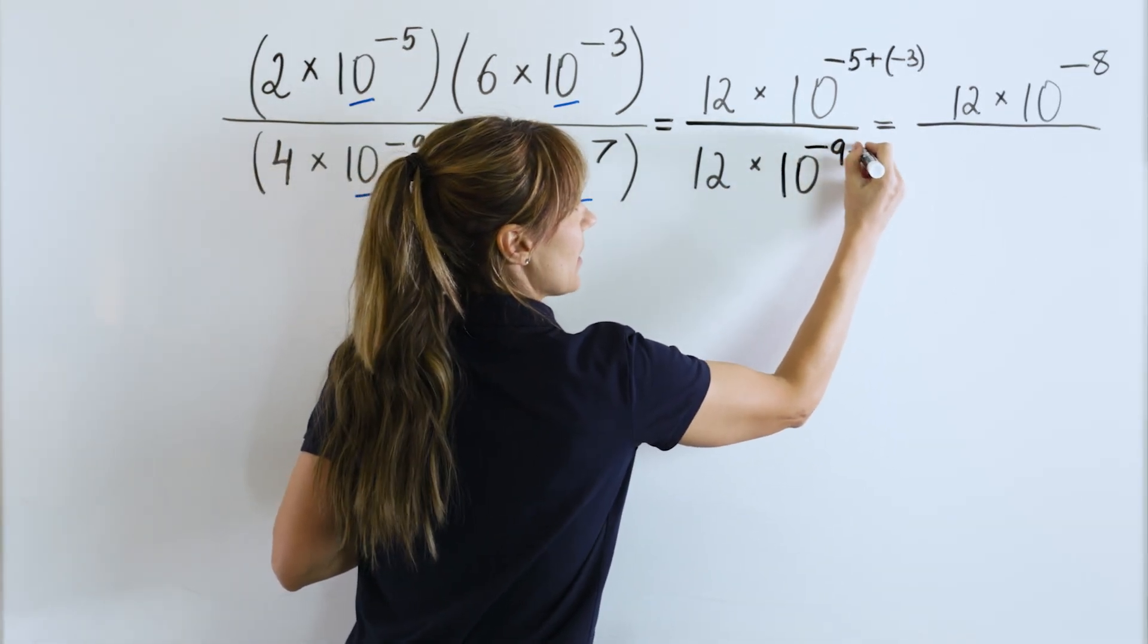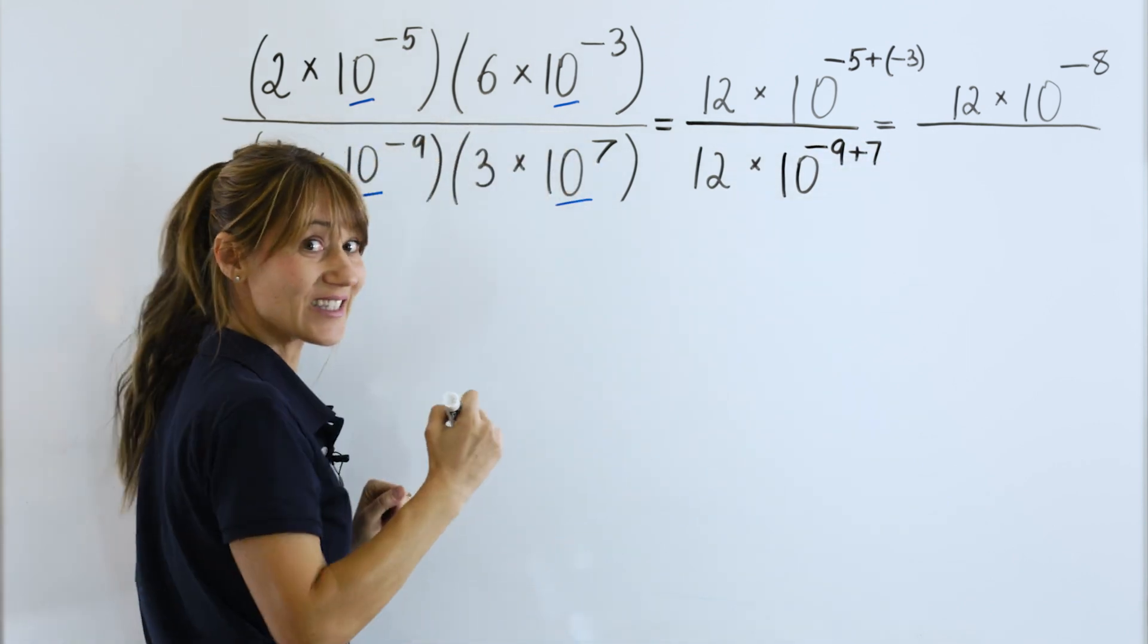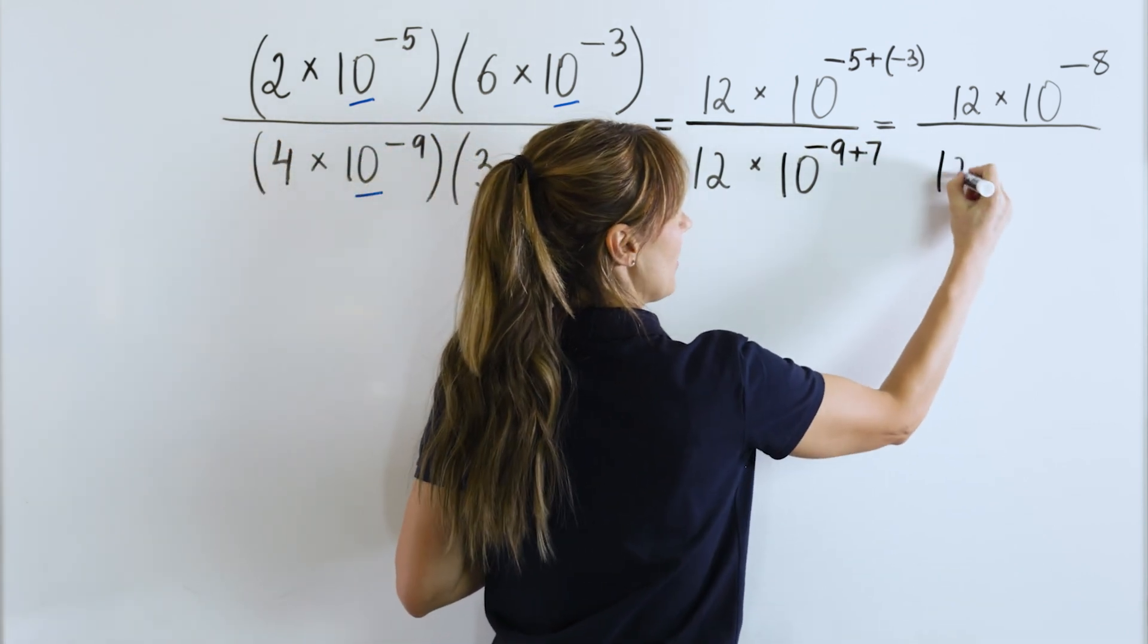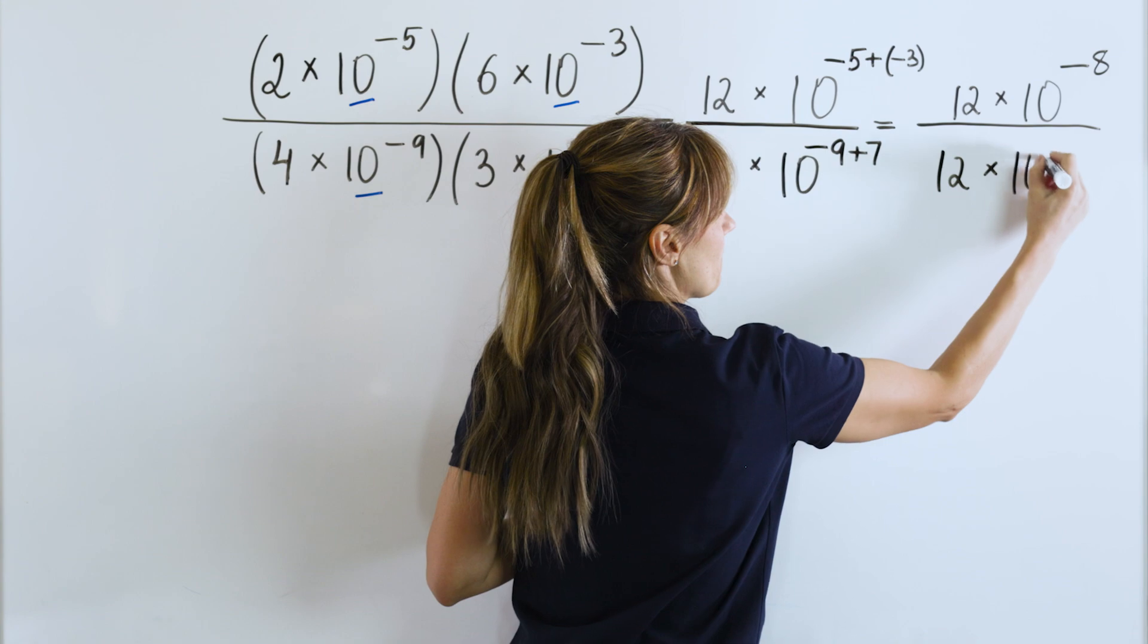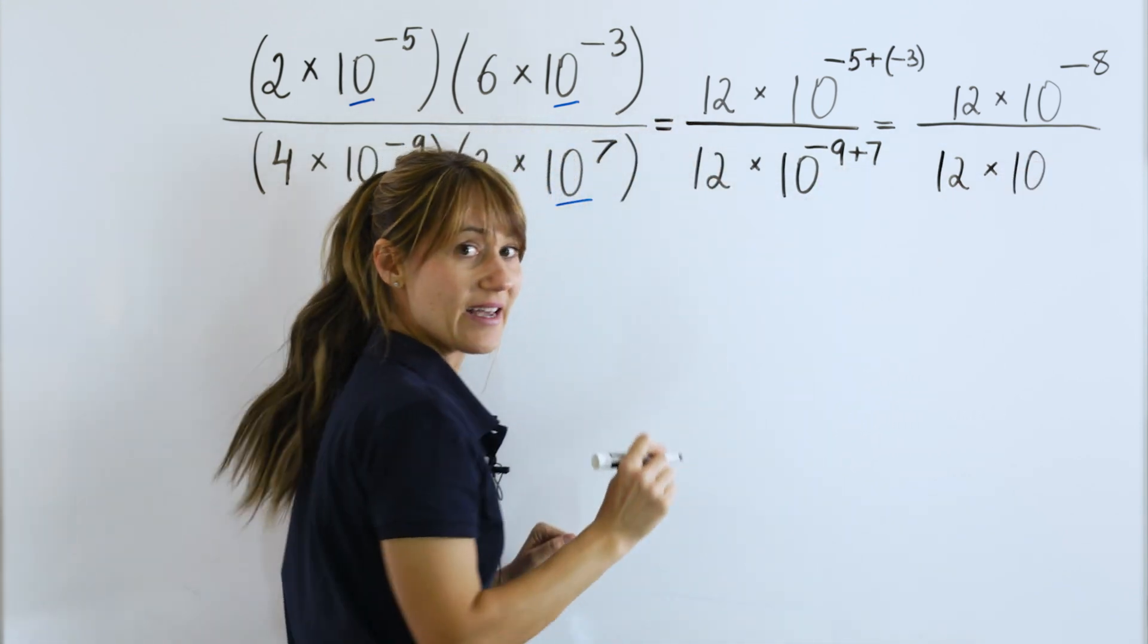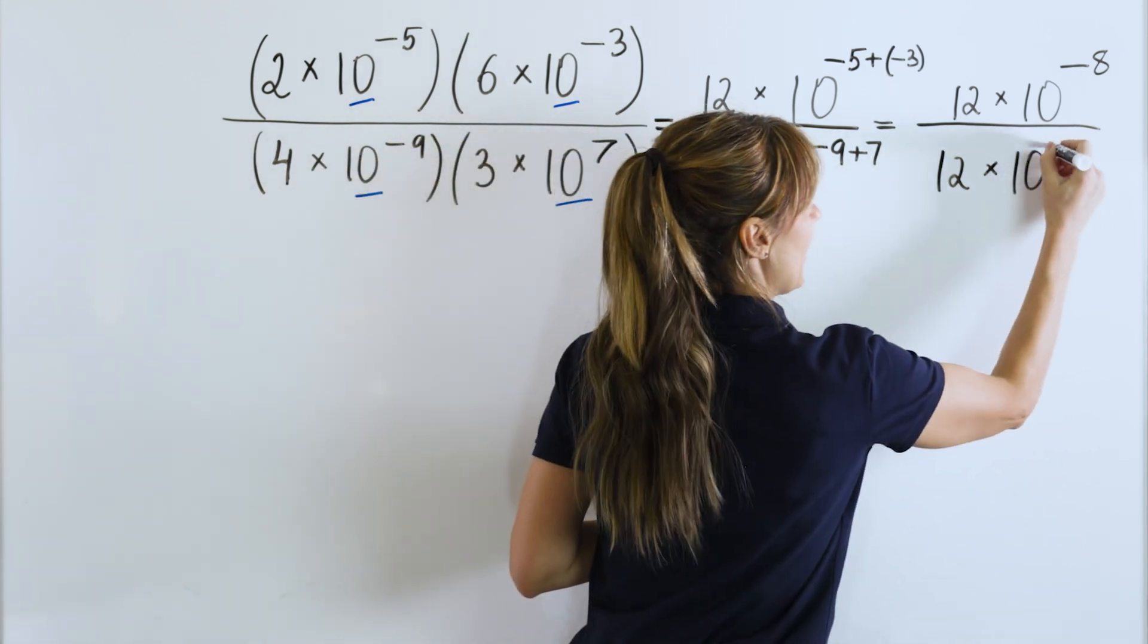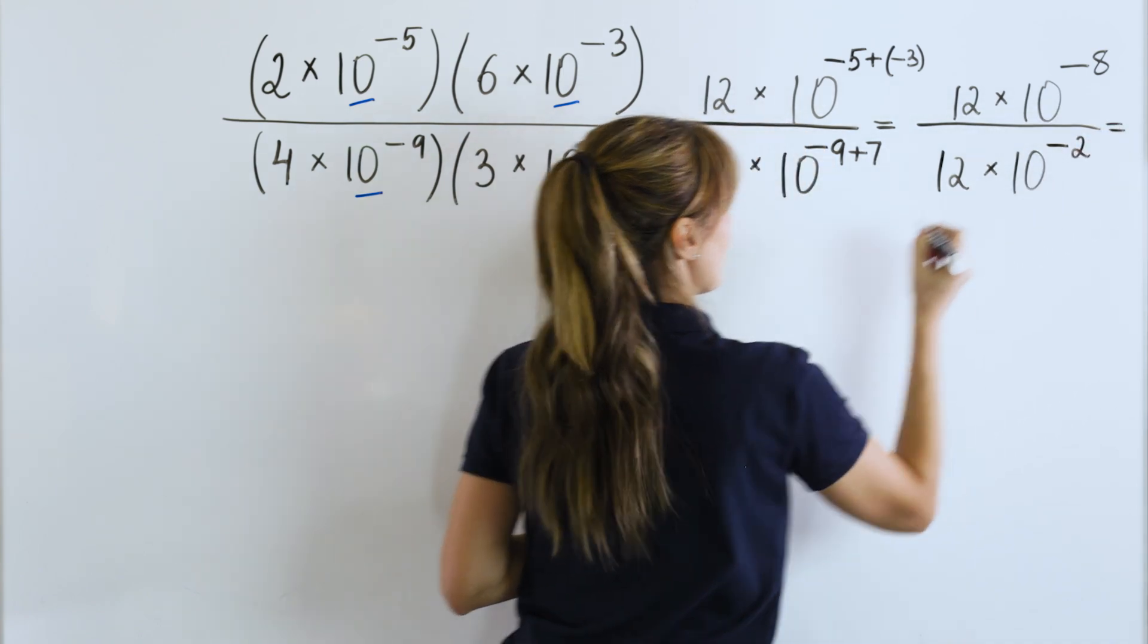Negative 9 plus 7. So, let's keep simplifying. We have 12 times 10. Negative 9 plus 7 will be negative 2.